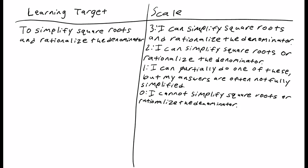Hi class! The learning target for today is to simplify square roots and rationalize the denominator — two separate things that are very much connected. For your scale: three means you can simplify square roots and rationalize the denominator. Two means you can do one but not both. One means you can partially do one, but answers are often not fully simplified. Zero means you cannot do either. Let's get started.